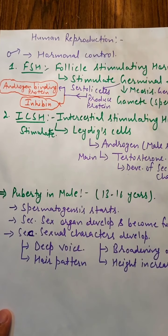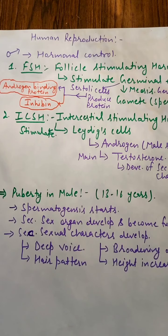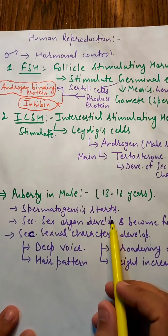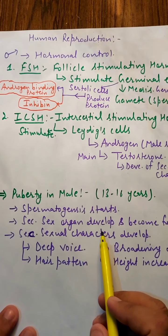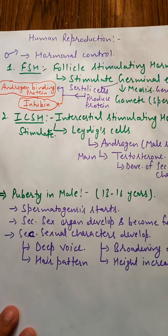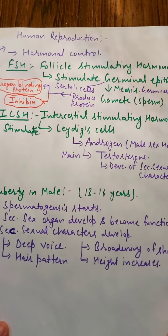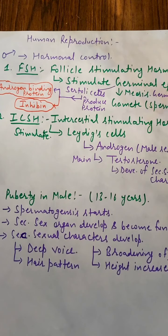Puberty is maturation. In the human male, puberty varies from 13 to 16 years of age. At this age, sperm production starts — spermatogenesis begins. The secondary sexual characters also start to appear, and the secondary sex organs develop and become functional.